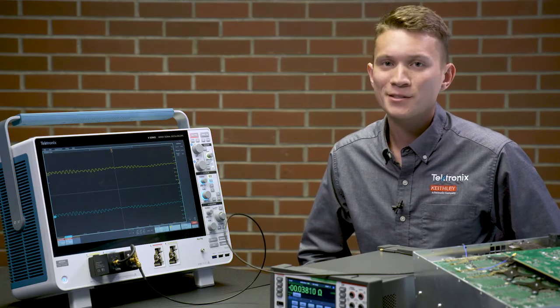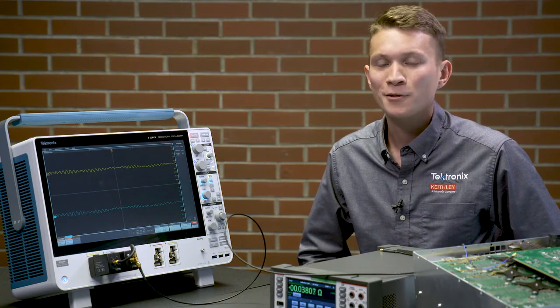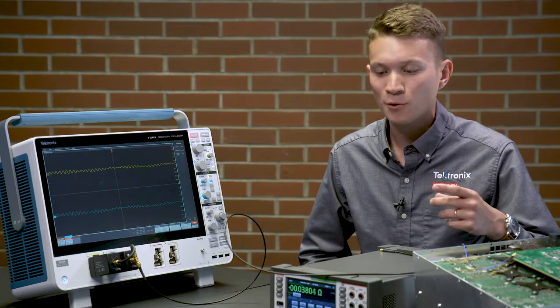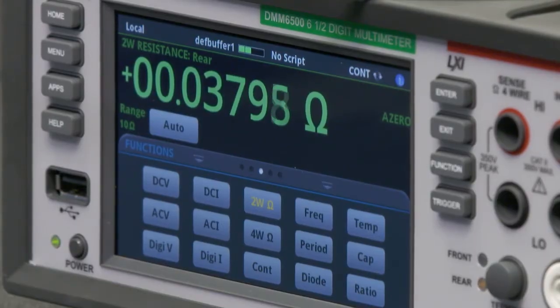After selecting a shunt resistor with an appropriate value and power rating, make sure you characterize its exact resistance using a four-wire DMM such as a Keithley 6500.